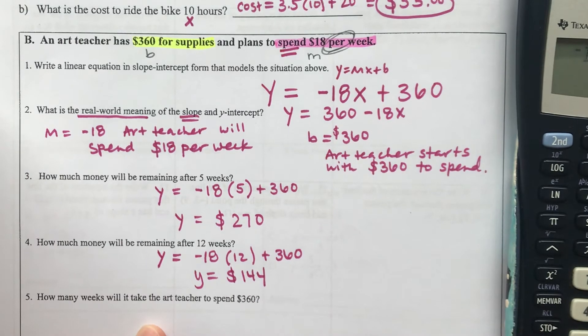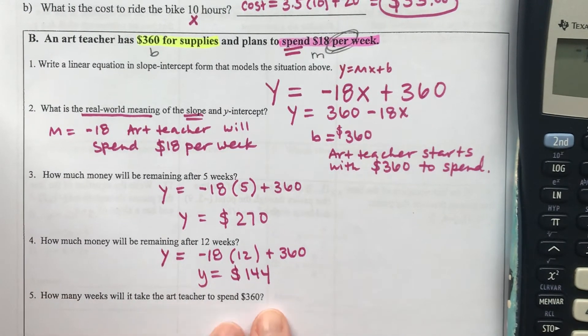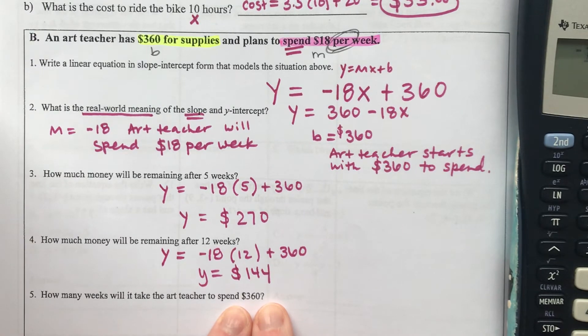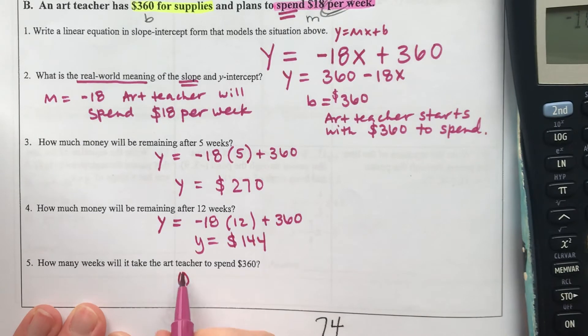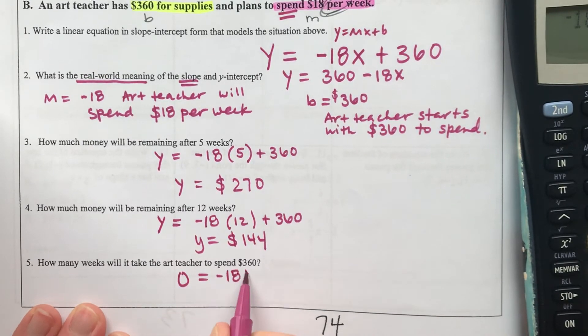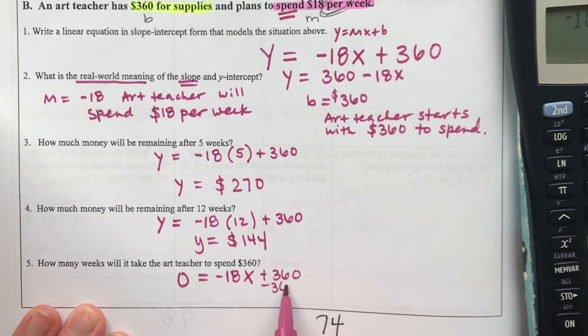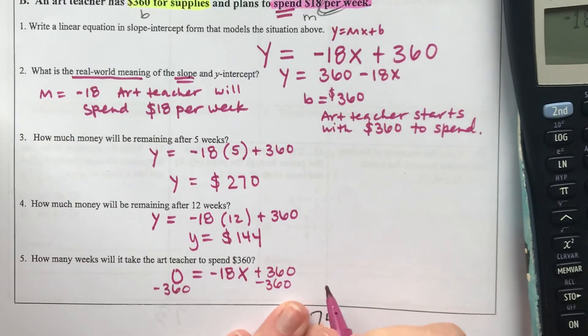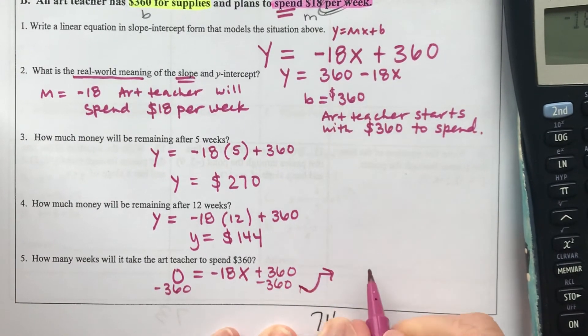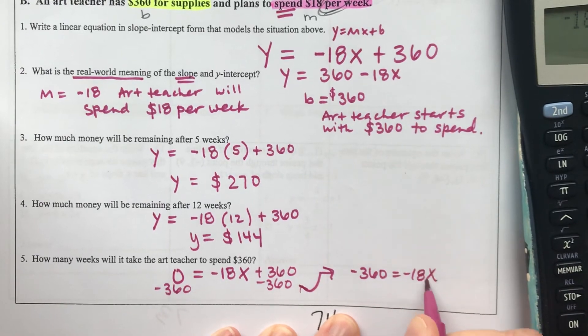The last question asks how many weeks will it take for the art teacher to spend all of the money. We're looking for when there's $0 left. Setting y = 0: 0 = -18x + 360. Subtracting 360 from both sides gives -360 = -18x.